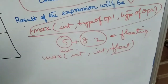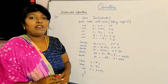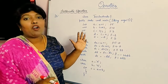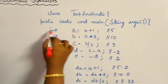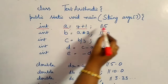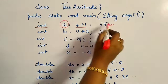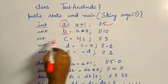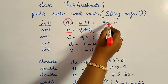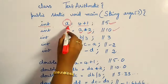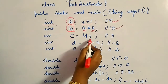Keeping all this in mind, let us see an example program where I have performed all the arithmetic operations. I declared variable a as integer with 4 plus 1, so a's value is 5. Then variable b is set to a into 2 — since a is 5, 5 into 2 is 10, so b is 10. Then c is equal to b by 3 — since b is 10, this is an integer division.